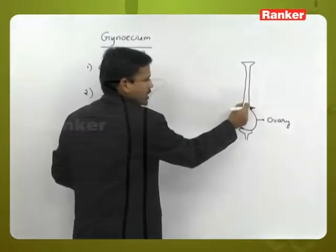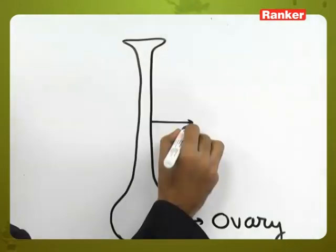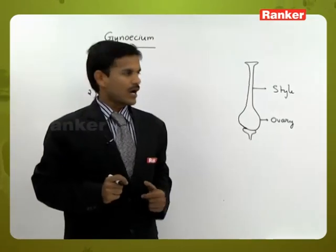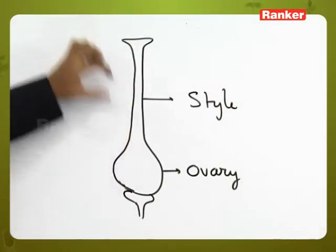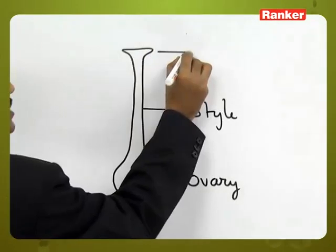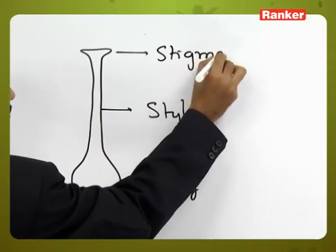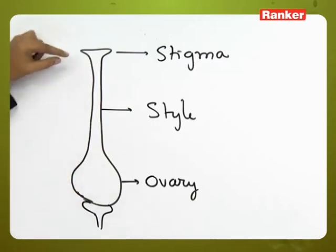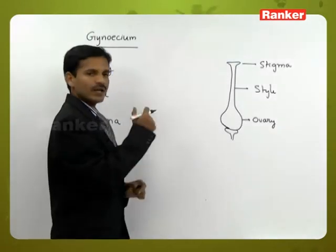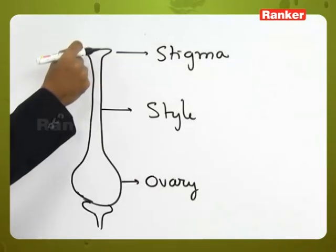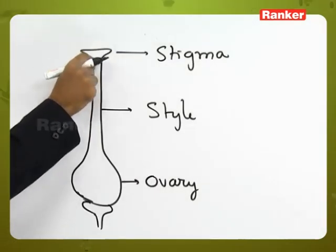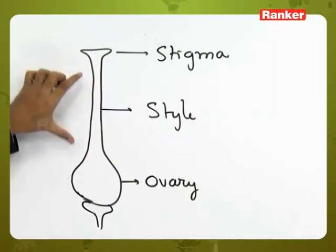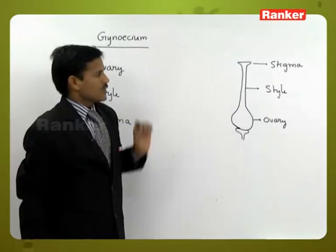The long tube-like structure is called the style. The style is a tube-like elongated structure connecting the ovary and the stigma. After pollination, the pollen grain develops into a pollen tube, and the pollen tube enters through the style. So style connects the stigma and the ovary and is the middle part of the Gynoecium.